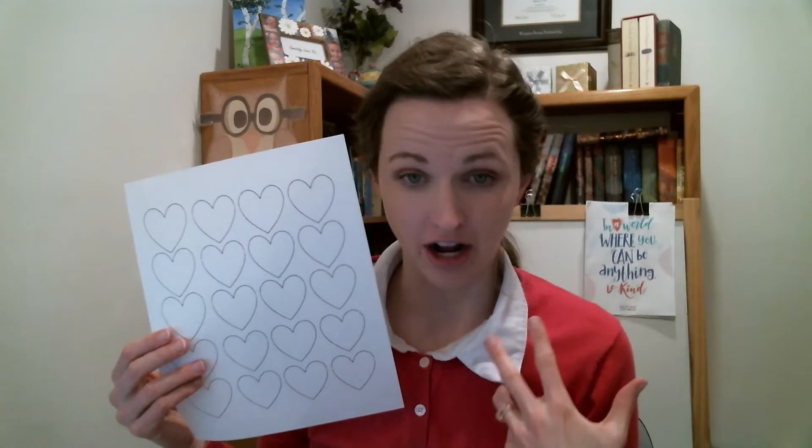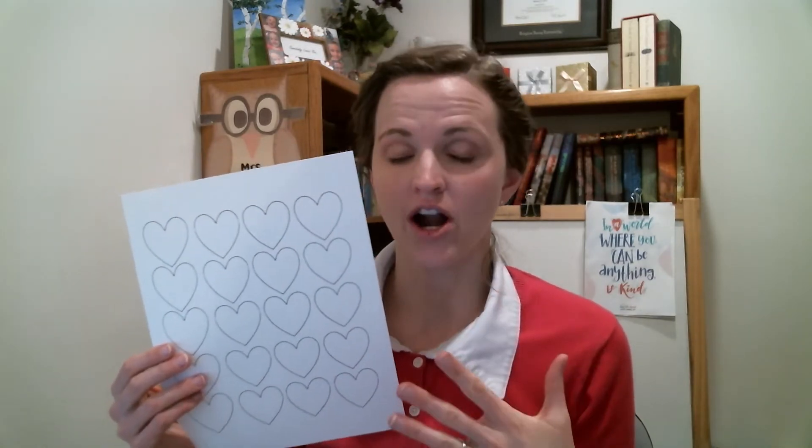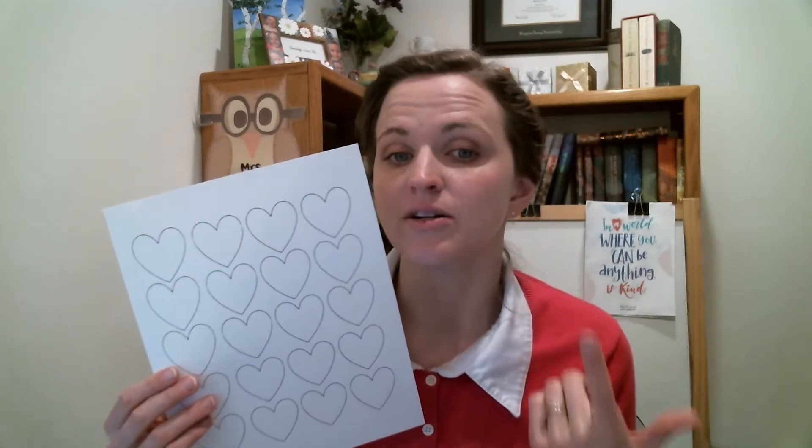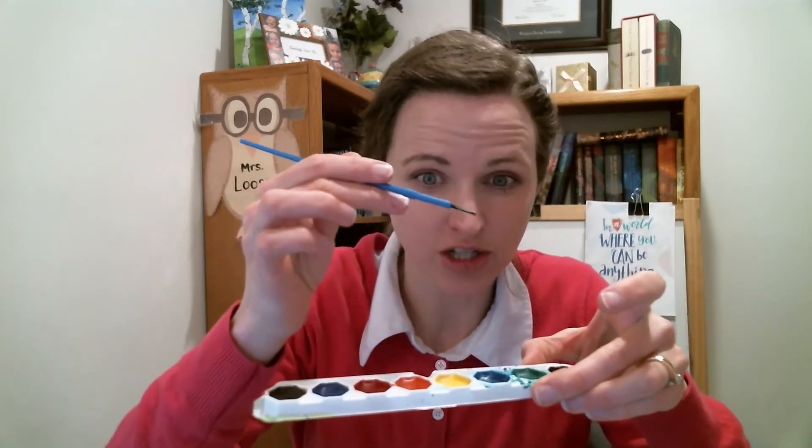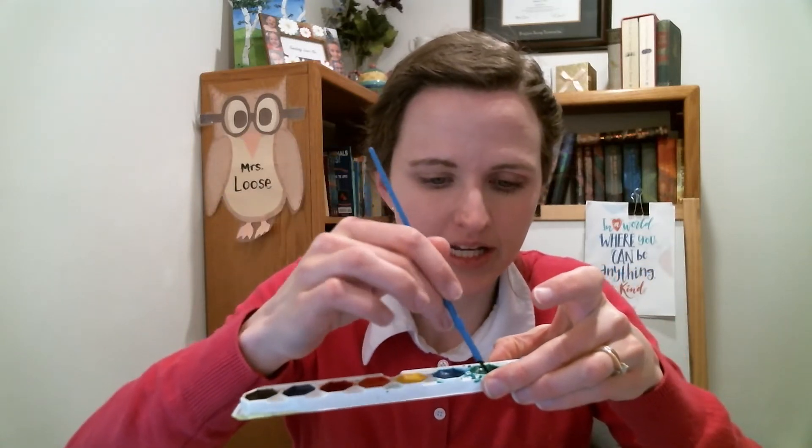Okay, when you have those, the next step is to color your hearts. You can use colored construction paper if you want to not color, or you can use crayons, colored pencils, markers. Today I'm going to use watercolor paint. So, to color my hearts, I'm going to dip my brush in some water. I don't want very much. I'm going to get a little bit. This time I'm going to use the green. And I'm going to start painting my hearts.